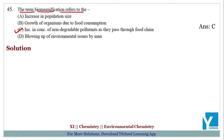So biomagnification में क्या होता हमारे पास? It is the increasing concentration of non-degradable pollutants as they pass through the food chain. तो जैसे हम food chain में pass करते हैं, pollutant की amount बढ़ती जाती है — तो वहाँ पर biomagnification इस phenomenon को बोलते हैं. So the answer is option C.